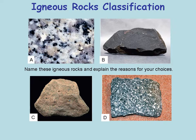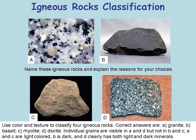Name these igneous rocks and explain the reasons for your choices. Granite is A, basalt is B, rhyolite is C, and diorite is D. The individual grains are visible in A and D, but not in B and C. So A and D would be plutonic, and B and C would be volcanic.